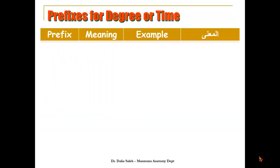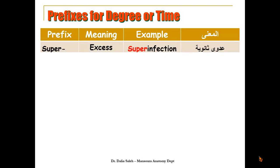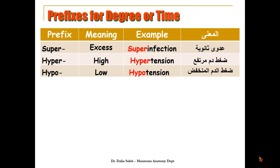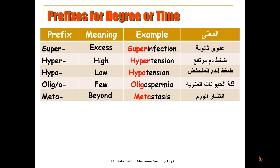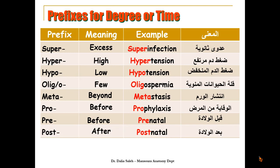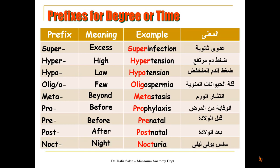Prefixes to describe degree or time: 'Super' means excess, as in 'superinfection'. 'Hyper' means high, as in 'hypertension'. 'Hypo' means low, as in 'hypotension'. 'Oligo' means few, as in 'oligospermia'. 'Meta' means beyond, as in 'metastasis'. 'Pro' means before, as in 'prophylaxis'. 'Pre' also means before, as in 'prenatal'. 'Post' means after, as in 'postnatal'. 'Noct' means night, as in 'nocturia'.